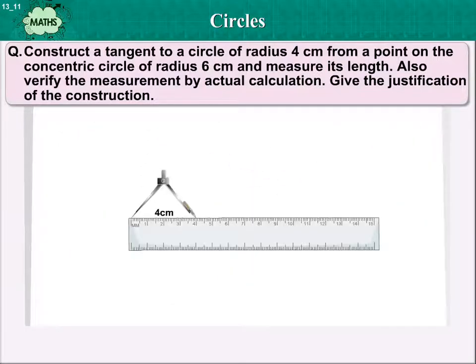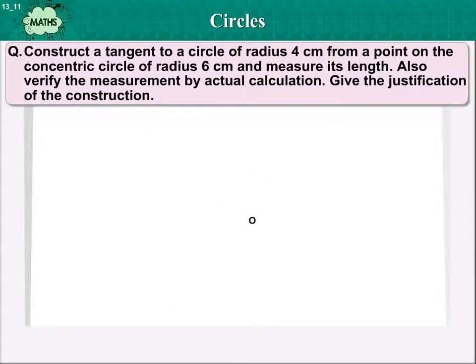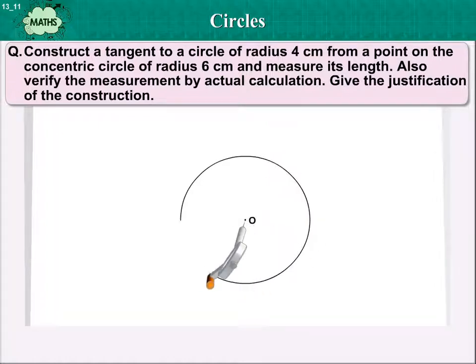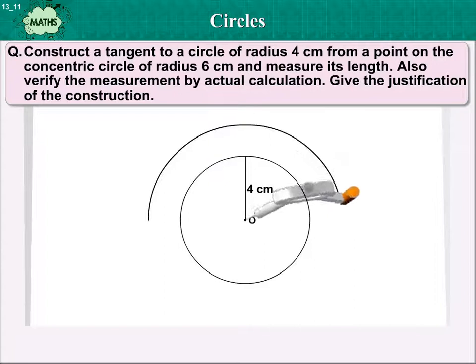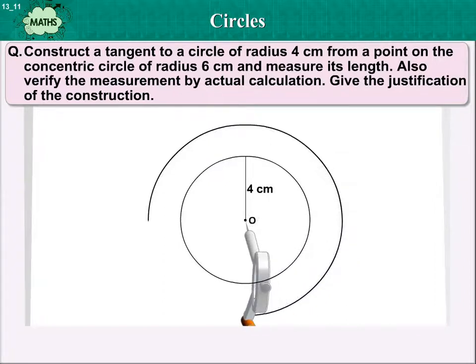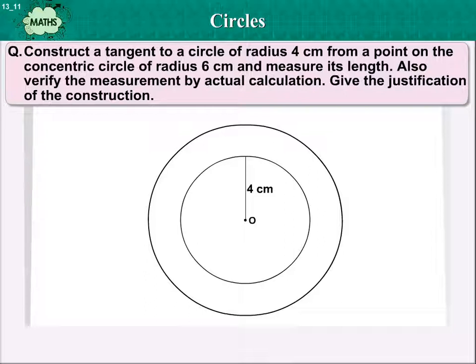Construct a tangent to a circle of radius 4 cm from a point on the concentric circle of radius 6 cm and measure its length. Also verify the measurement by actual calculation. Also give the justification of the construction.